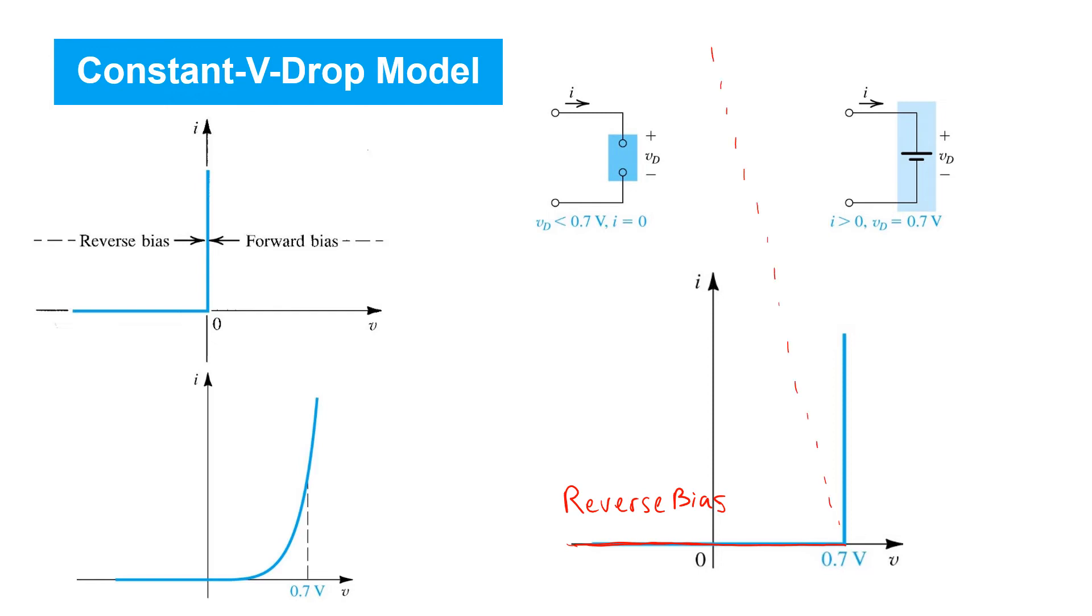The other situation is forward biased. Here we assume that any current may flow in the forward direction while a voltage drop constant at 0.7 volts is maintained. This is precisely this portion of the curve - the IV characteristic offered by an ideal voltage source as shown over here.